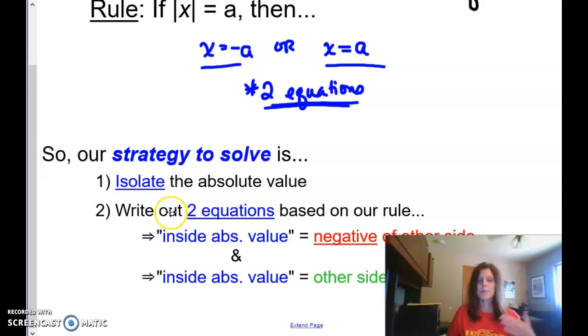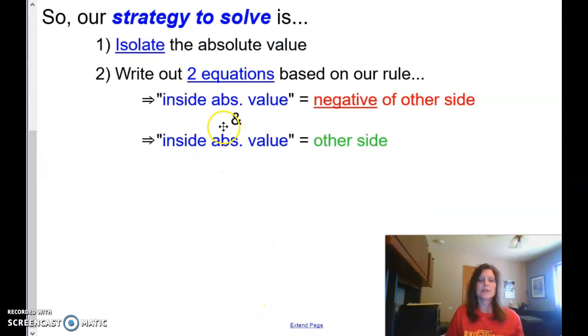So my general strategy, make sure my absolute value is isolated. There's no plus or minus or multiply times anything with my absolute value. It's just absolute value equals number. And then I get my two equations from there. So I either get the stuff that's inside equal to the negative moving to the left, or the stuff inside is equal to the positive moving that many units to the right. Let me show you an example or two.